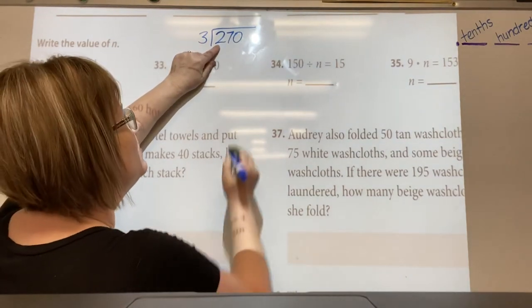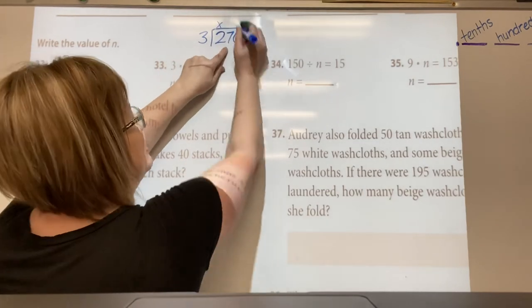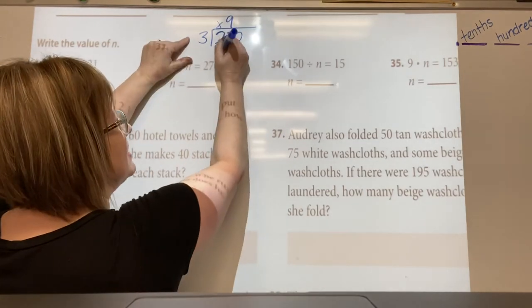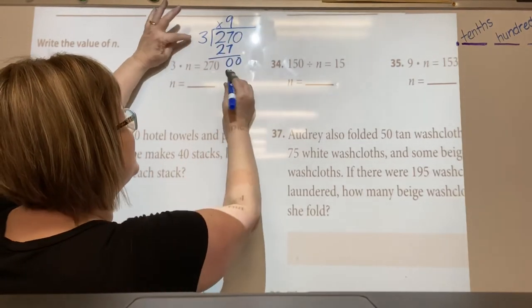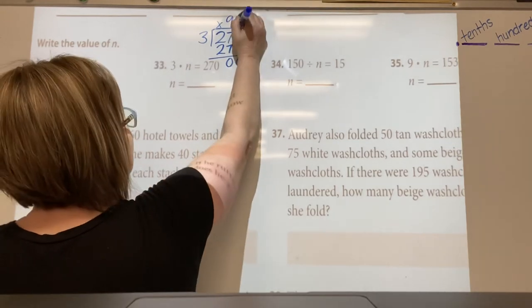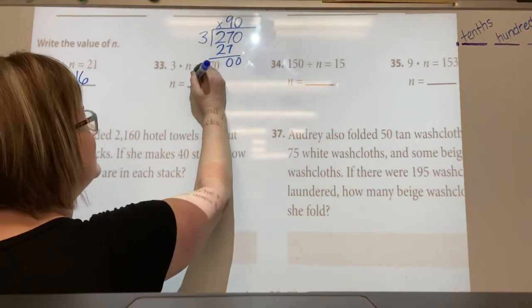So 3 doesn't go into 2, 3 goes into 27 nine times, 3 times 9 is 27, bring down 0, it goes into 0 zero times, so it's 90.